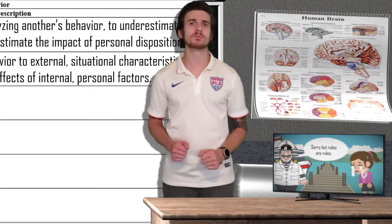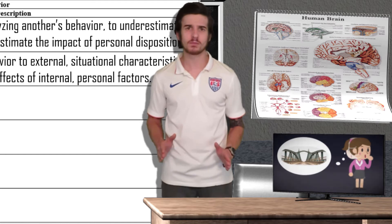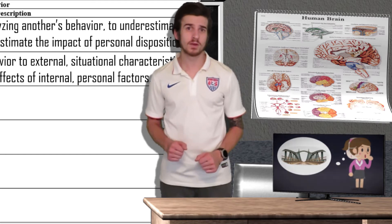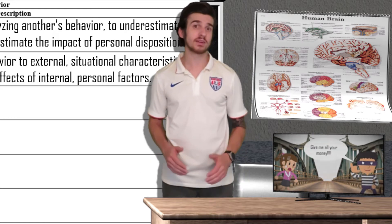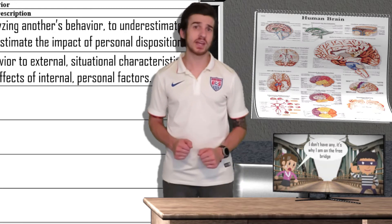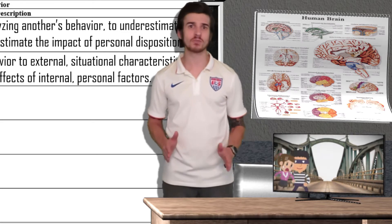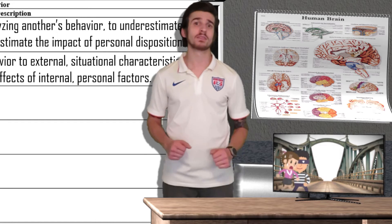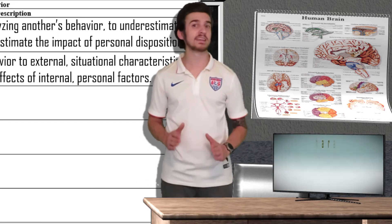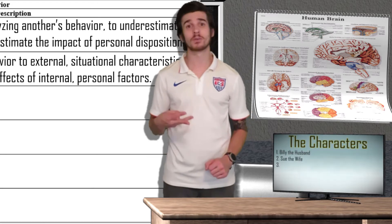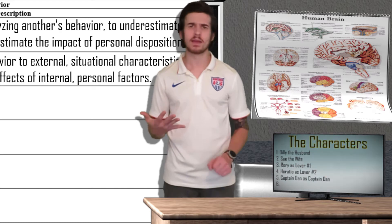Dawn was quickly approaching and Sue knew her husband would be returning home soon. She remembered there was a free bridge about a mile away from the ferry. The bridge was known for violent crime, but Sue was running out of options. While on the bridge, a thief approached Sue and demanded all of her money. Sue told the man she had no money, but the thief refused to believe her. The thief attempted to search Sue and she resisted. During the tussle, the thief stabbed Sue and she died. So that's our story. We had six characters: the husband Billy, the wife Sue, the first lover Rory, the second lover Horatio, Captain Dan, and the thief.